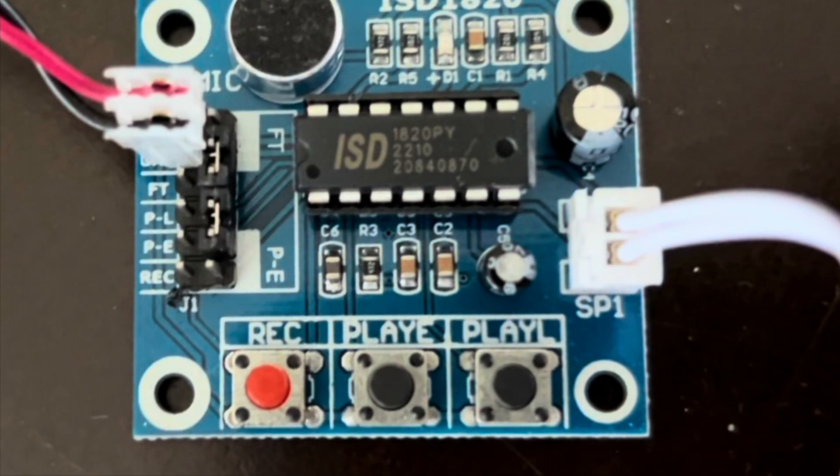When we left off, we were using this ISD1820 sampler looper lo-fi chip. This was a control module that it comes on, and we had modified it to be able to manually adjust pitch control and input with the microphone, as well as an audio line in feature.